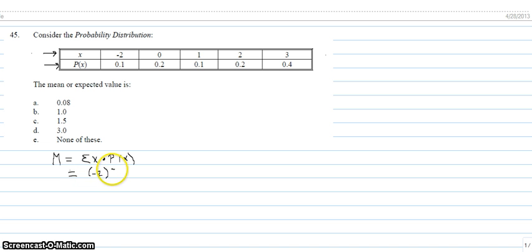times 0.1, plus 0 times 0.2, plus 1 times 0.1, plus 2 times 0.2, plus 3 times 0.4.